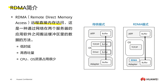RDMA is Remote Direct Memory Access. In the field of data centers, RDMA is a technology that bypasses the remote host operating system kernel to access its memory data. For traditional TCP/IP, in the process of data packet handling, it has to go through the operating system and other software layers to read the corresponding data. It needs to occupy a lot of server resources and memory bus bandwidth, with data constantly being copied and moved back and forth between memory, processor caching, and network controller cache, putting a burden on the server's CPU and memory.